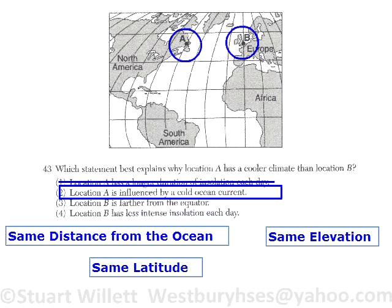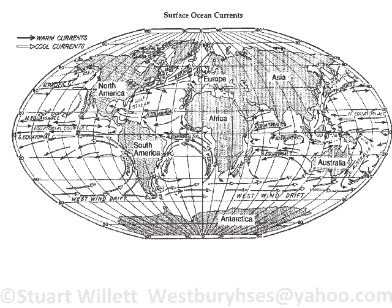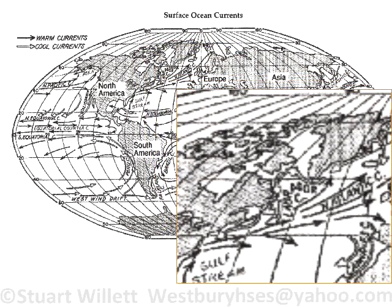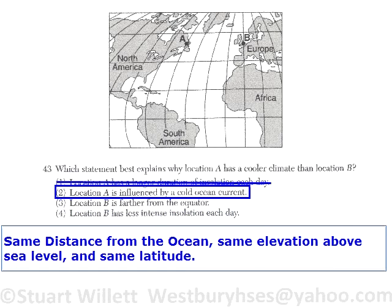Number two: location A is influenced by a cold ocean current. Let's open up the reference tables and look at the ocean currents. Here you can see that yes, location A is influenced by a cold ocean current. Going back to the map, number two is a good answer.